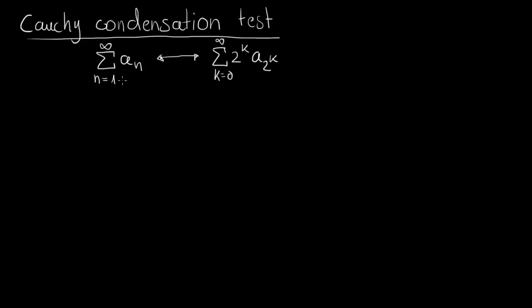What is also important is that the terms have to be monotonically decreasing. It's also very important that their signs are all equal. Most people say there must only be plus signs, but if you only have negative signs, just factor out the minus and you again have a sum with only positive signs. You are not allowed to have an alternating series, for example plus one minus one and so forth.